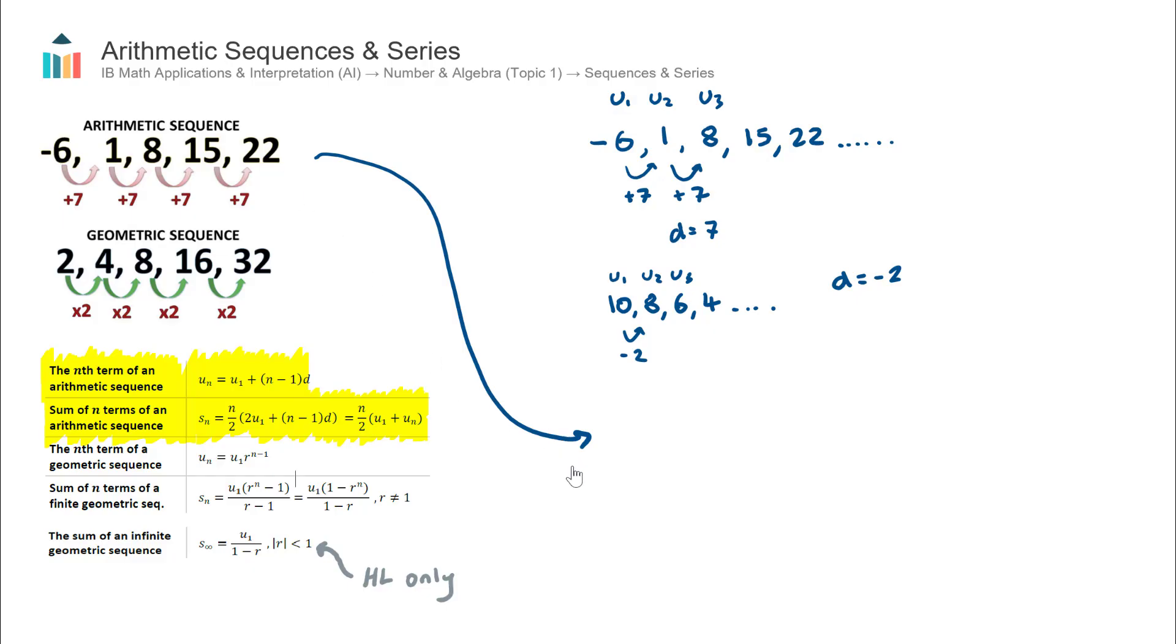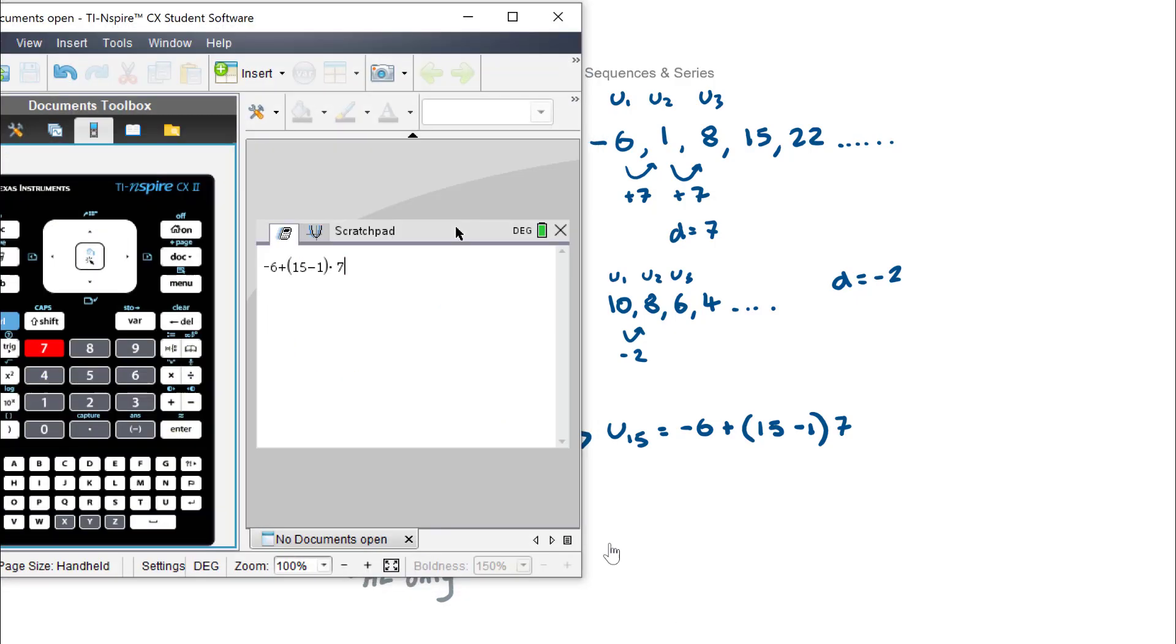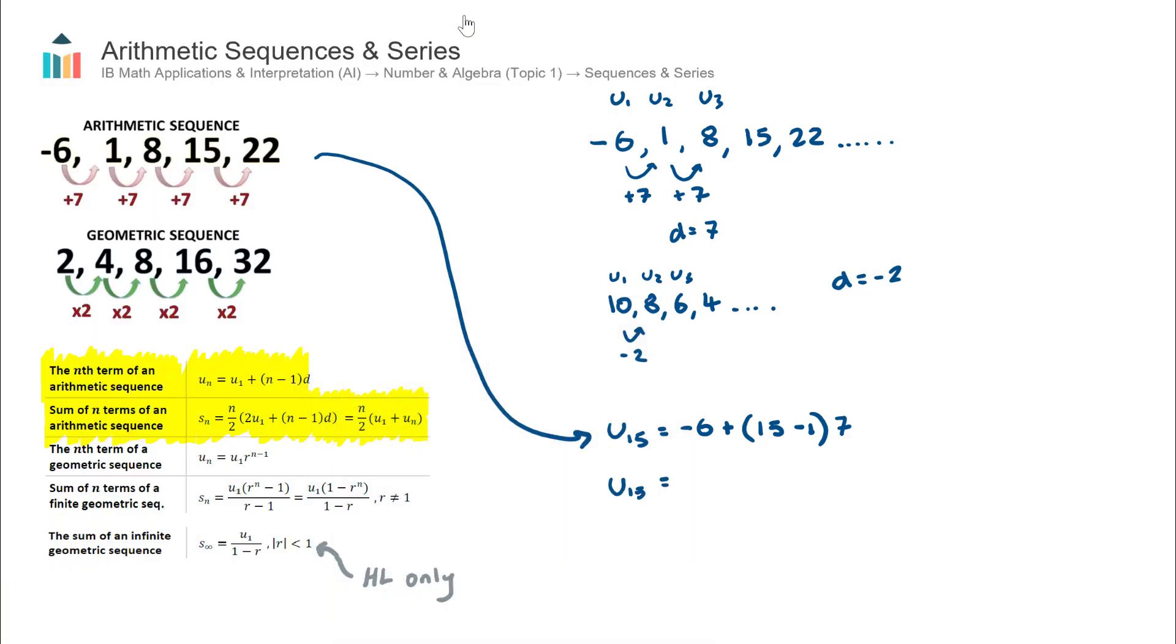Let's say we wanted to find the 15th term. The correct notation is U15. That will be equal to the first term, which we know is negative 6, plus brackets n take one. Now, n is the term number that we are looking for. In our case, we're looking for the 15th term, so it's going to be 15, subtract one, multiplied by our common difference, which is 7. We can use our calculator to find out what the 15th term is, and I get a 15th term value of 92. So U15 is equal to 92.